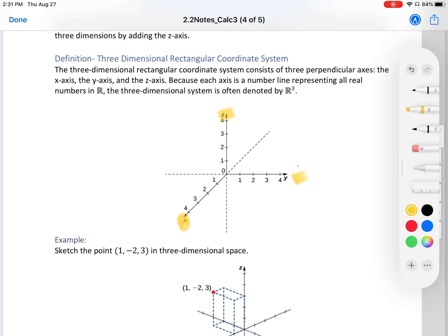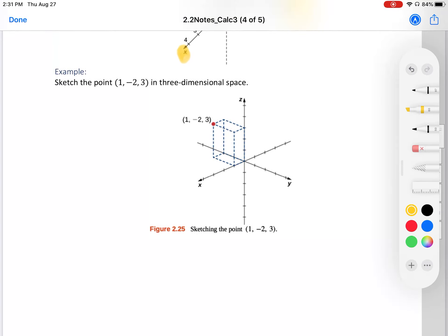Let me show you an image of what it would look like to plot a point with an example. Sketch the point (1, -2, 3) in three-dimensional space. Here we have an image from your textbook. We see that we would go on our x-axis to find 1, then the y-axis to find -2, and from there we expand to go up 3, which would be our z-axis. And now we have this point right here.